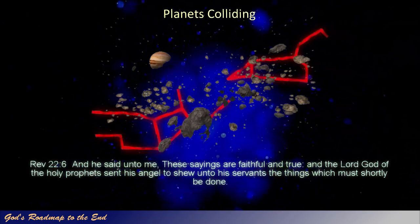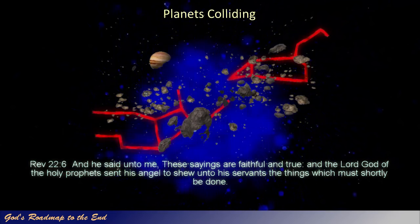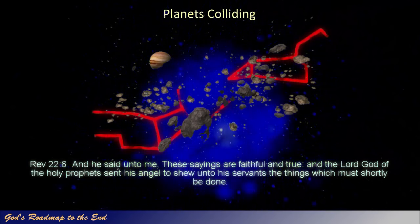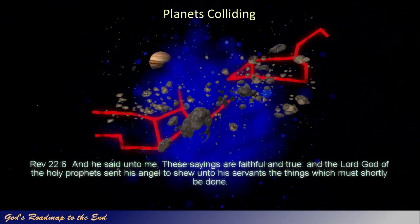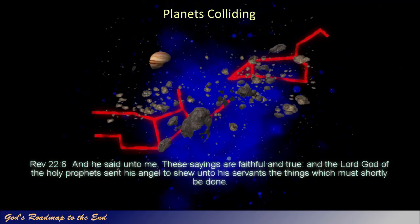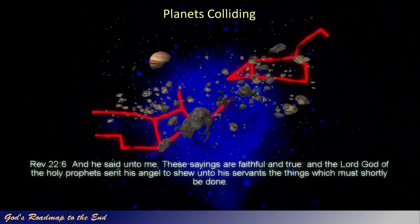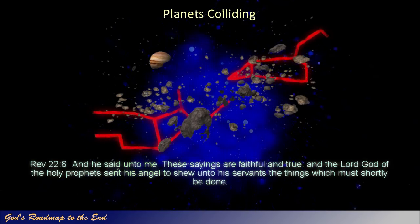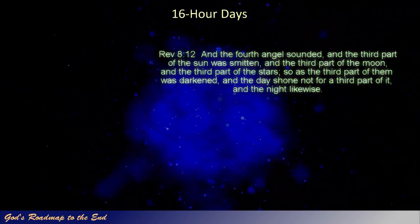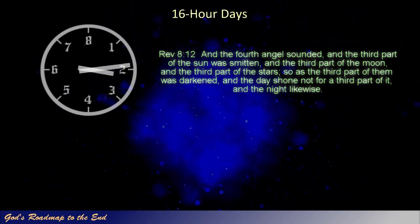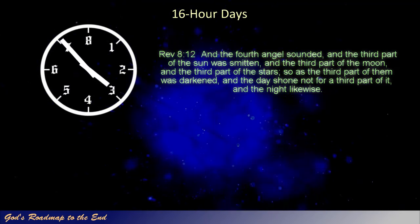I have always wondered how the destruction that is written about in Revelation would come about, and what would trigger the devastation described in that book. What natural phenomena would be responsible for suddenly raining down several large asteroids onto the earth over a short period of time? What would be responsible for speeding up the rotation of the earth so that a day will no longer be twenty-four hours long, but only sixteen hours? Revelation 8 verse 12: 'And the fourth angel sounded, and the third part of the sun was smitten, and the third part of the moon, and the third part of the stars, so as the third part of them was darkened, and the day shone not for a third part of it, and the night likewise.'